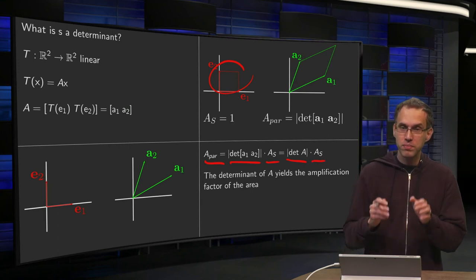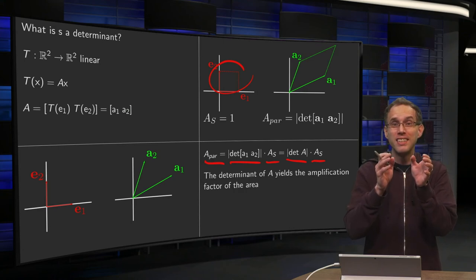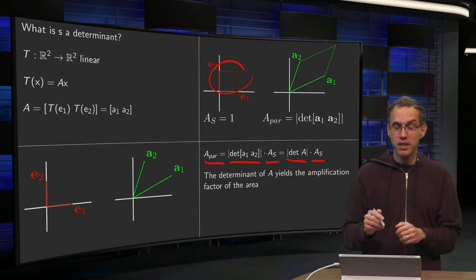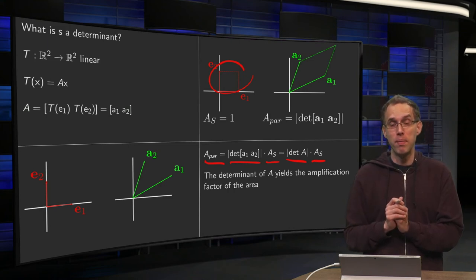So what happens, the determinant of A tells you how much bigger your image has grown. It gives you the amplification factor of your mapping.